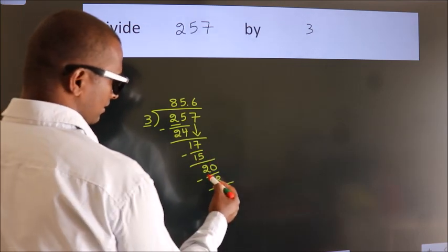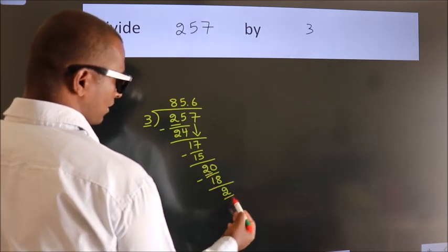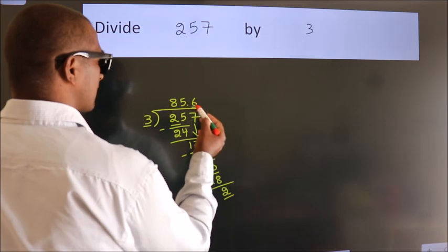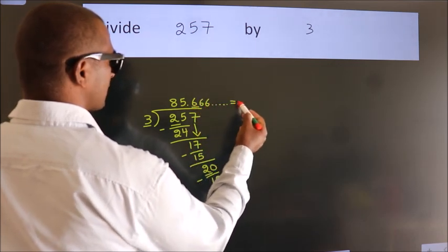Now, observe. We had 2 here and we got 2 again. That means this number keeps repeating. So, this is our quotient.